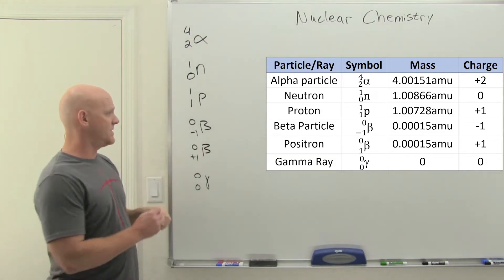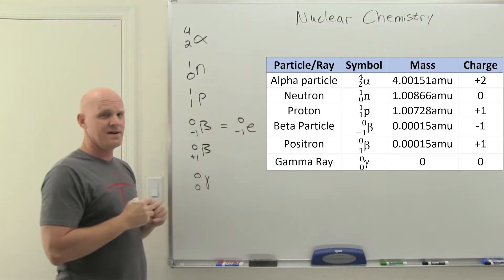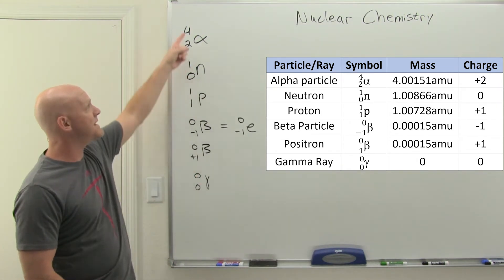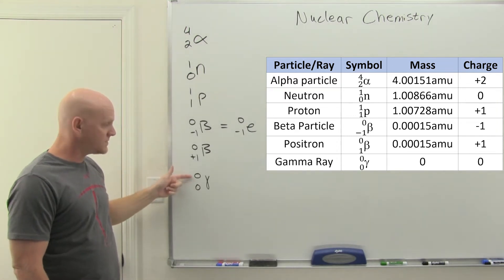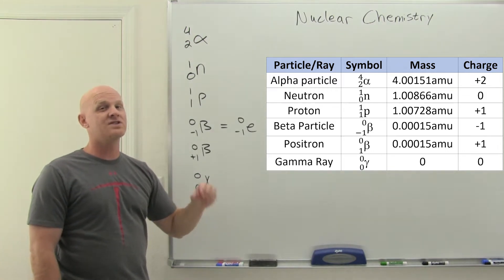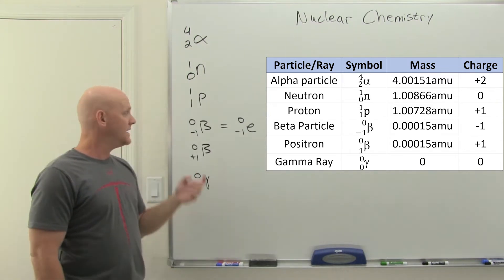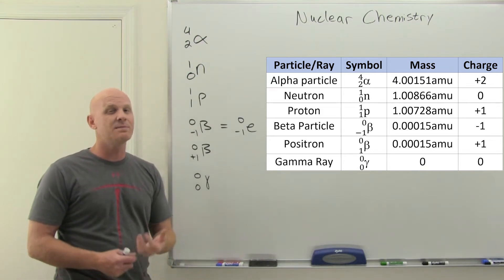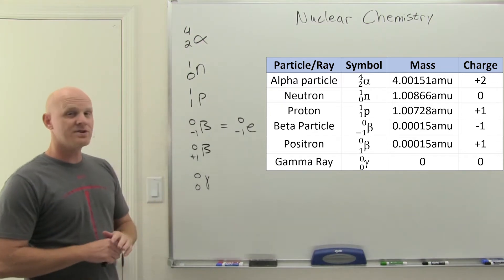The proton has a charge of plus one and mass number of one. Then we've got the beta particle, also written with an E for electron. It's got a charge of negative one and mass number of zero. I've given you the exact masses of all these on the table - they're not exactly four, one, one, zero. The electron's mass number is zero, kind of rounded to a whole number, but its actual mass is 0.00015 AMUs, some tiny fraction. The fact that it has a little bit of mass is going to be important for a generalization we make in just a second.